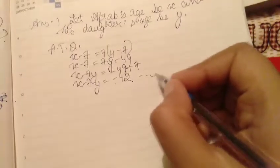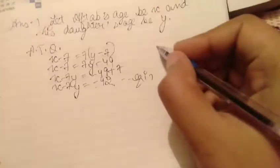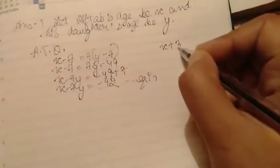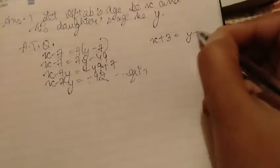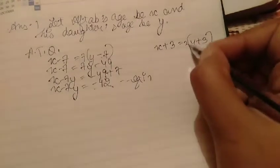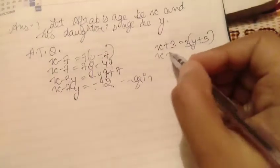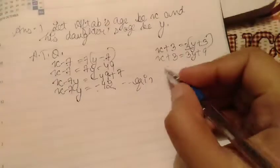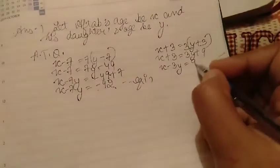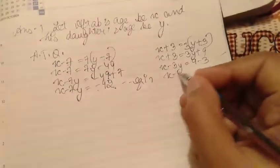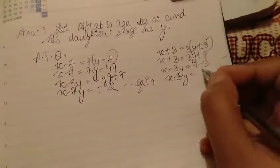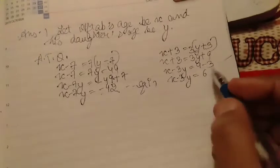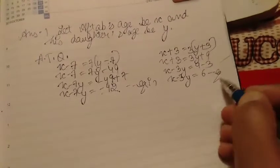This is Equation 1. Next portion: 3 years later, X + 3 = 3(Y + 3). Expanding: X + 3 = 3Y + 9, so X − 3Y = 9 − 3, which gives X − 3Y = 6. This is our Equation 2.